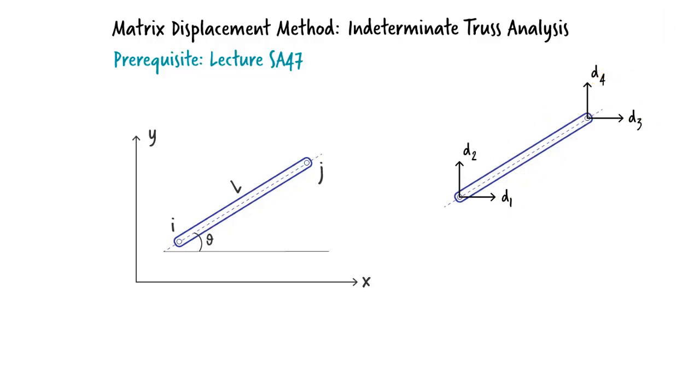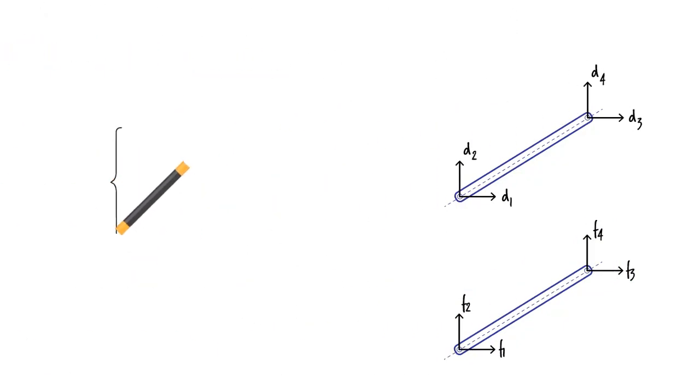The truss member has four degrees of freedom, two displacements in the x-direction and two displacements in the y-direction. We can also define four member end forces. There are two forces in the x-direction and two forces in the y-direction. As was explained in the previous lecture, the relationship between the displacement vector and the force vector can be written in matrix form.